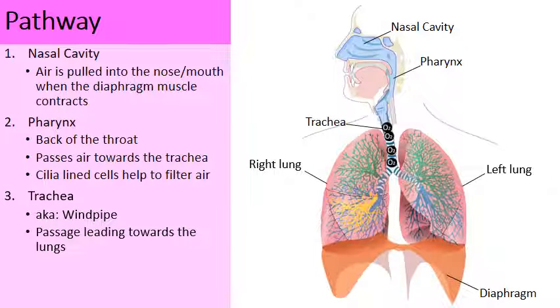We have our left lung and our right lung. This is from the orientation of the person, so it looks like it's backwards on screen. The left lung appears on the right and the right lung appears on the left, but this is from the orientation of the person.